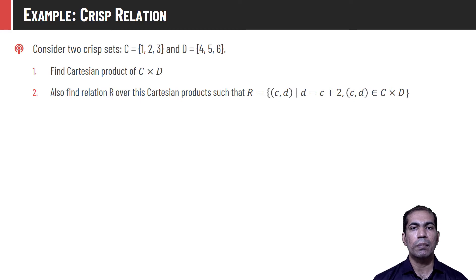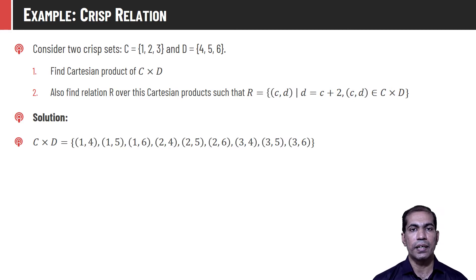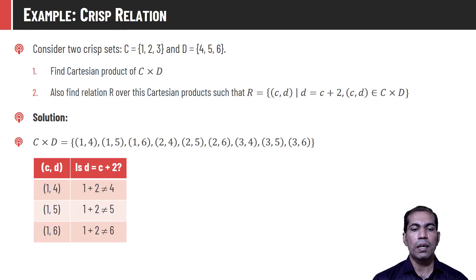We have to find the Cartesian product of C and D and also find the relation where the condition is D = C + 2. Let us first compute the Cartesian product between C and D, so every element of C will be related with every other element in D. That means C×D would be: (1,4), (1,5), (1,6), (2,4), (2,5), (2,6), (3,4), (3,5), (3,6). The condition for the relation is that d should equal c + 2. For the first three tuples (1,4), (1,5), and (1,6), none satisfy the condition D = C + 2, so no tuple will be included in relation R.